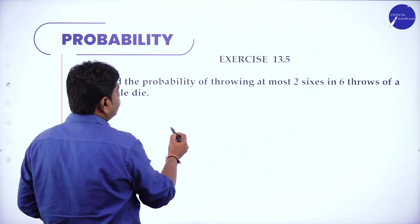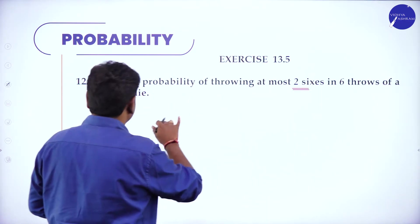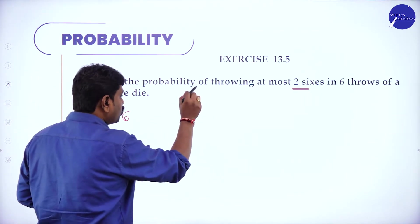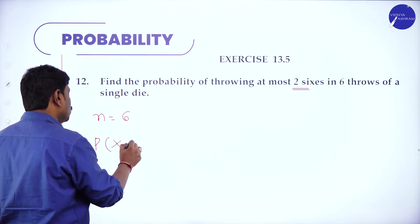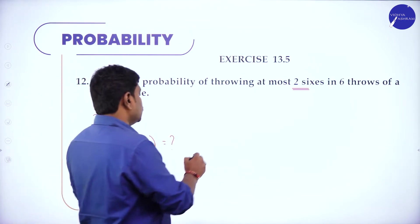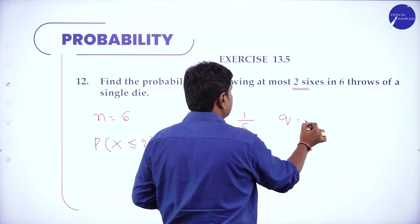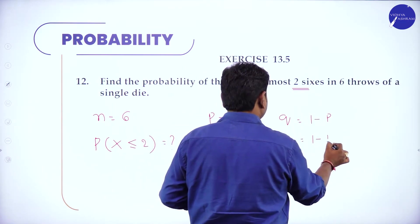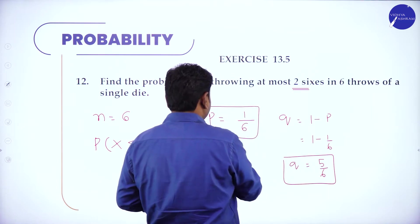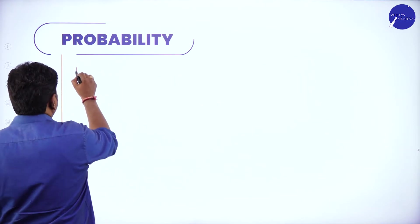Next problem: find the probability of throwing at most 2 sixes in 6 throws of a single die. So n = 6. At most 2 sixes means you should get 2 or fewer sixes. Probability of success (getting a six) is p = 1/6, and q = 1 − 1/6 = 5/6.